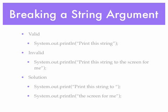The solution, if you want to print to a single line, is to use two commands. First, system.out.print and pass 'print this string to' as the argument. Then a second command, system.out.println, passing 'the screen for me' as the argument. The compiler executes the first line, prints 'print this string to', stays on that same line because you called the print method, then executes the second line and prints 'the screen for me' immediately after, then moves the cursor to the next line. The result on screen is the single line: 'print this string to the screen for me'.